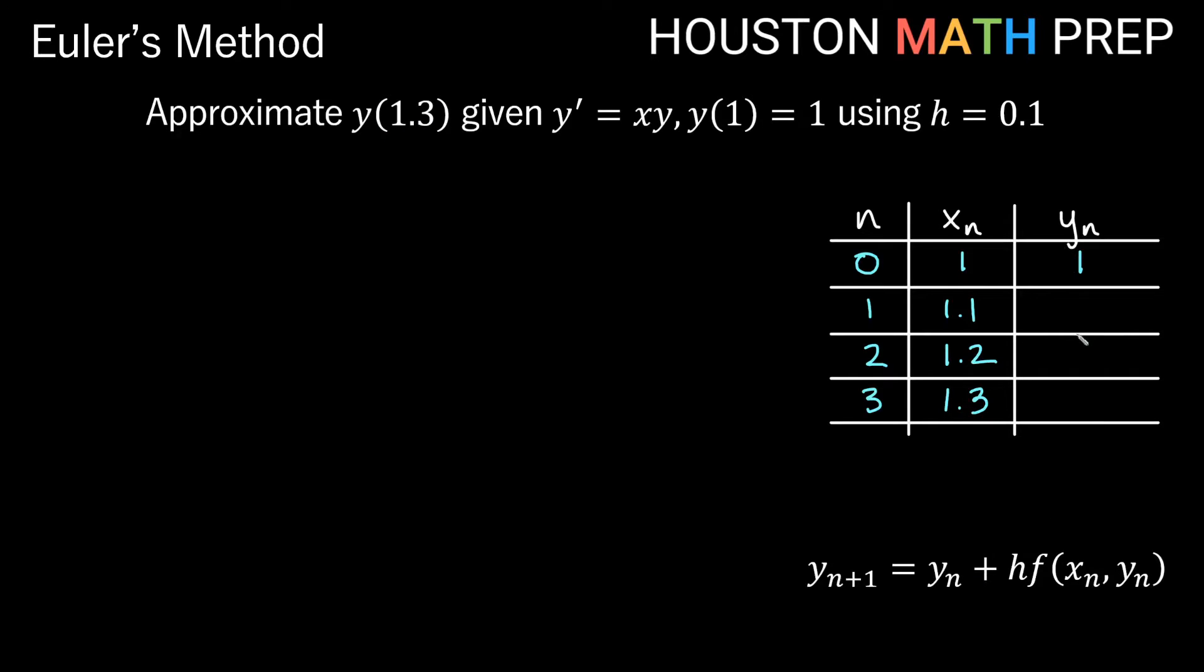So now all we need to do is find the y values that go along with this using our Euler's method formula here and any information we have from the table previously. So the next thing in our chart we need to find is the y value when n is 1. So we are finding y1. And now notice this subscript is one larger than the subscript over here. This is subscript of n plus 1. So these are n over here. So if we're solving for y1, then yn is going to be y0 plus h times our function of xn yn, which would be times our function of x0, y0. So we'll take all of the information we know about x0, y0, we'll put it in the right side here from our table, and then that will help us get our y1.